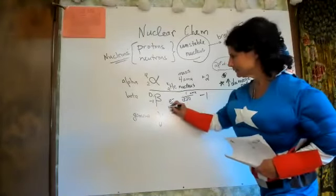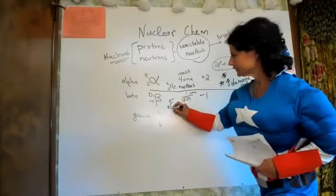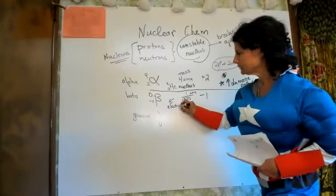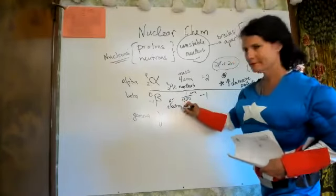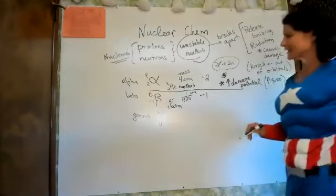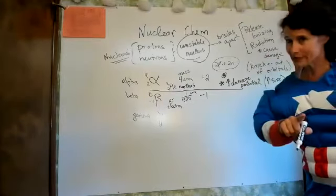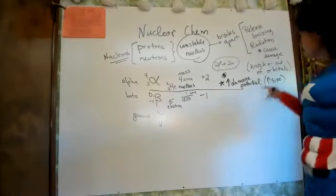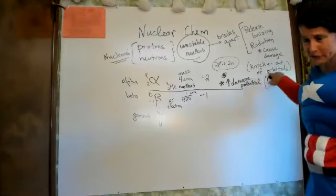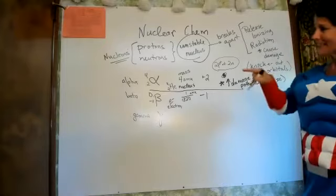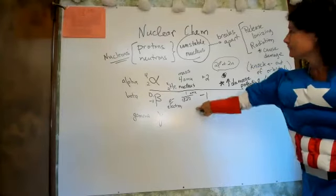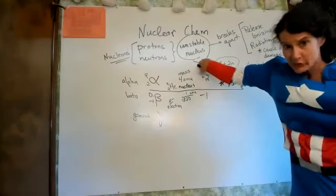The beta particle is always written with a zero and negative one symbol. It is not an ordinary electron because most electrons are in the orbitals — this is an electron that came from the nucleus.